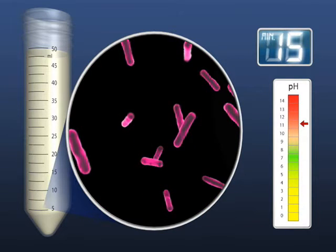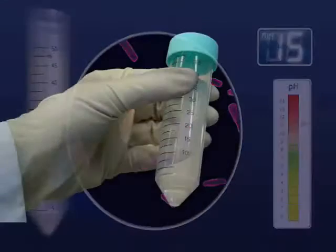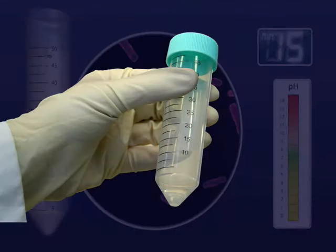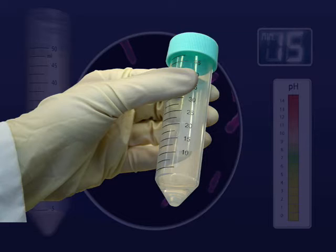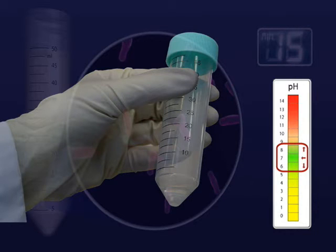To further compound the problem, laboratories have traditionally used this same M15 phosphate buffer, saline, or water to resuspend their sample after centrifugation. This leaves the sample with a final, highly variable pH that can lead to further organism die-off and may cause false positive results in sensitive automated detection equipment.